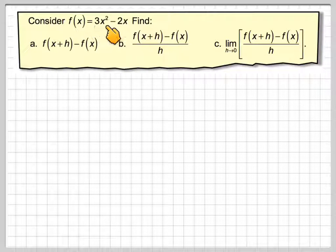Consider f(x) = 3x² - 2x. Find: a) f(x+h) - f(x), b) [f(x+h) - f(x)]/h, and c) the limit as h goes to 0 of [f(x+h) - f(x)]/h.